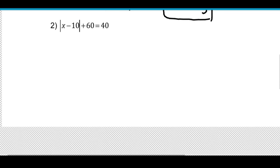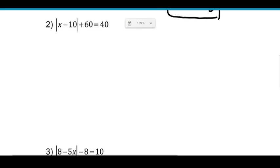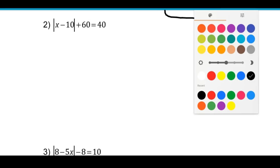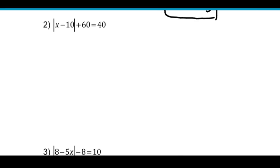Taking a look at number 2. This is an example of what I was saying. You have to isolate the absolute value quantity first before you start splitting into two cases. So our very first thing we have to do is get rid of this 60. I'm going to take 60 away from both sides of the equal sign, and that way our absolute value quantity is all by itself. So we have absolute value x minus 10 equals negative 20.